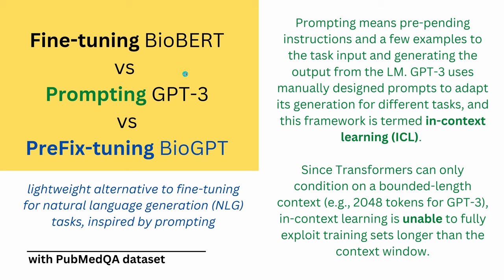GPT-3 or ChatGPT has the option of prompting. Prompting means pre-pending specific instructions and a few examples to the task input, and then the output is generated from the language model, which is significantly better. GPT-3 in particular uses manually designed prompts to adapt its generation for different tasks. This framework has a specific term: when you hear 'in-context learning' or ICL, you know it is about prompting - prompt engineering the input to a GPT system.